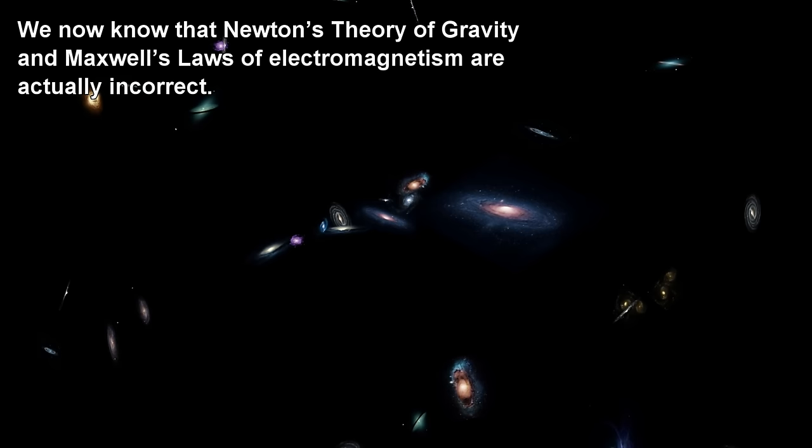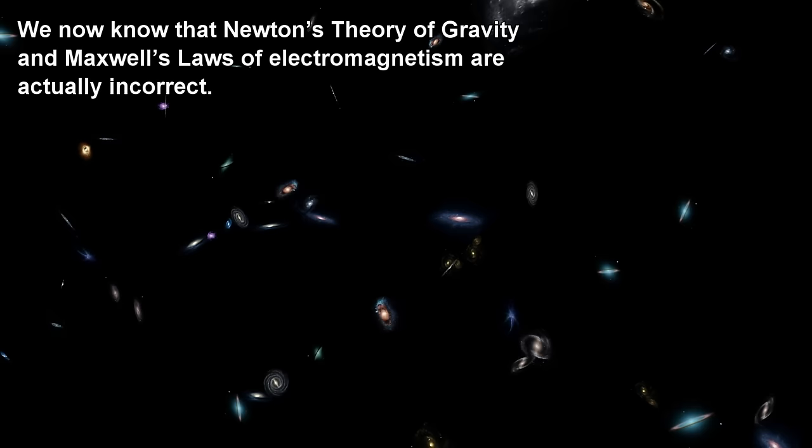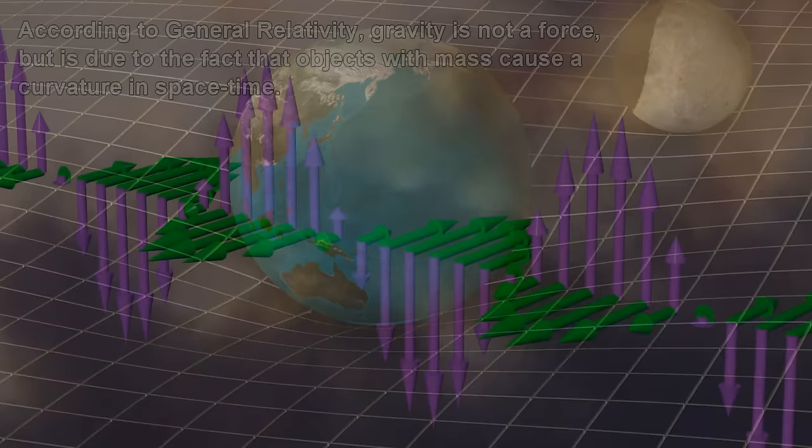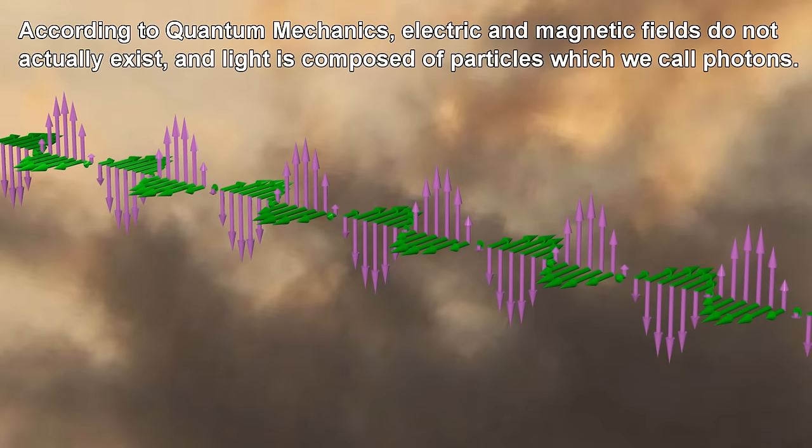We now know that Newton's theory of gravity and Maxwell's laws of electromagnetism are actually incorrect. According to General Relativity, gravity is not a force, but is due to the fact that objects with mass cause a curvature in space-time.